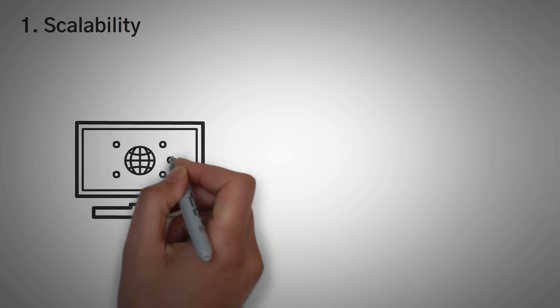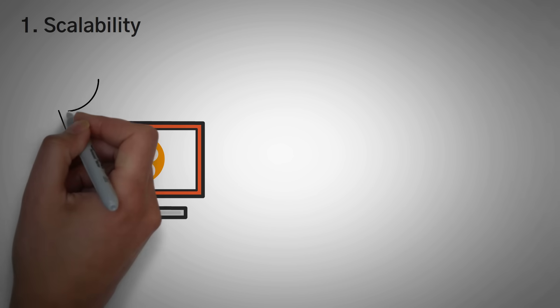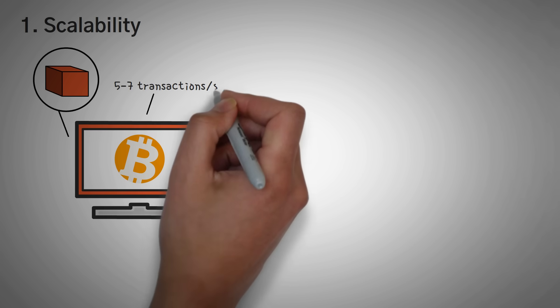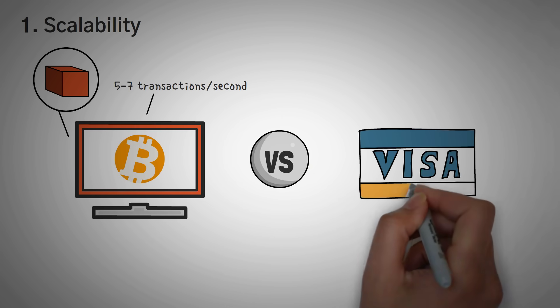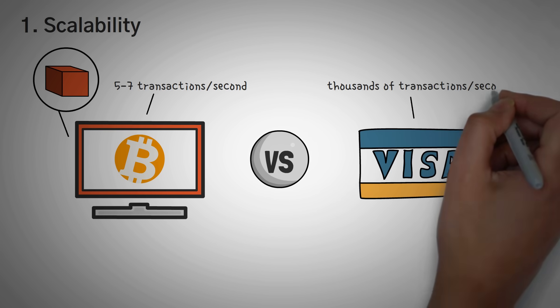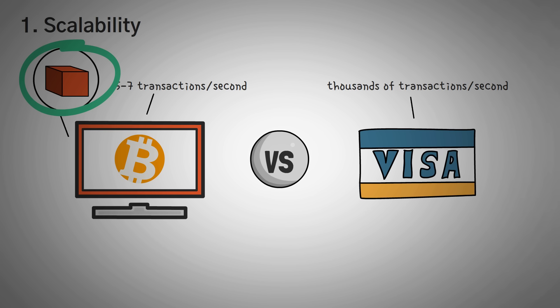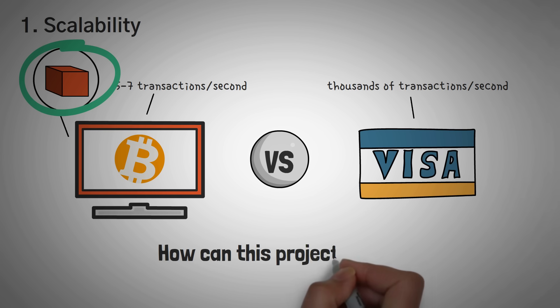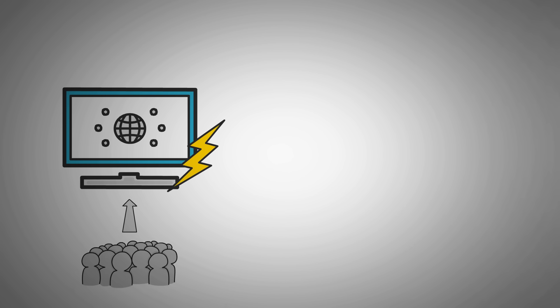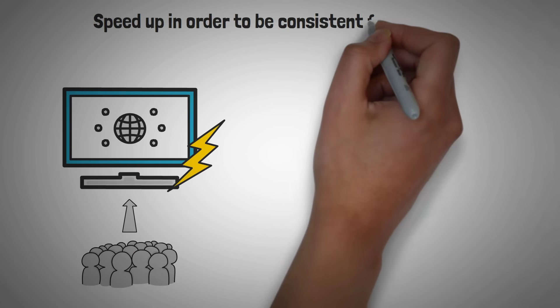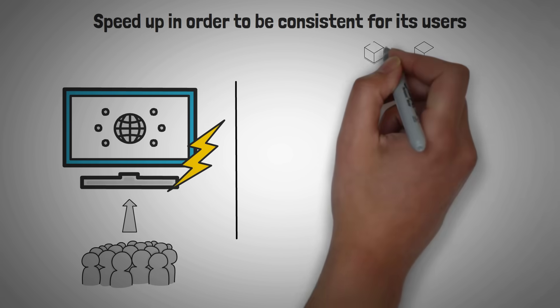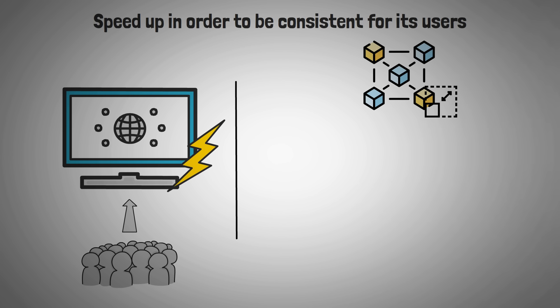Number one is scalability. Fans of Bitcoin know this problem all too well. Because of Bitcoin's block size, the network can only confirm around 5 to 7 transactions per second. This is not even comparable to the Visa behemoth that can do tens of thousands of transactions per second. The block size debate in Bitcoin raged on for years, but at least one question remains for basically any cryptocurrency: how can this project scale? As Hoskinson has said, we actually want things to speed up as more users use a system, not slow down as many of them do. A blockchain's capability should scale linearly with its usage.